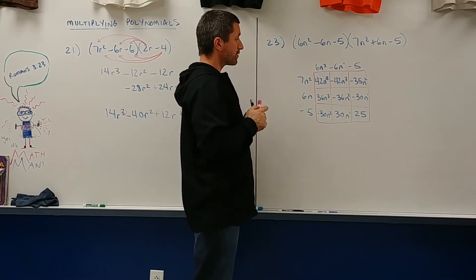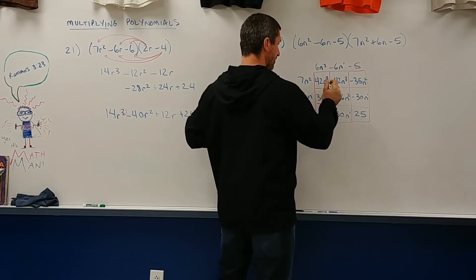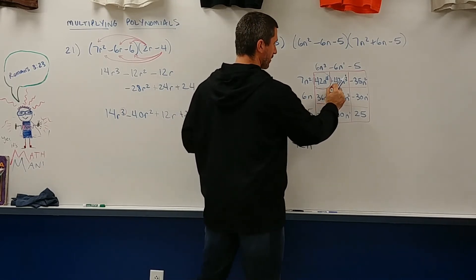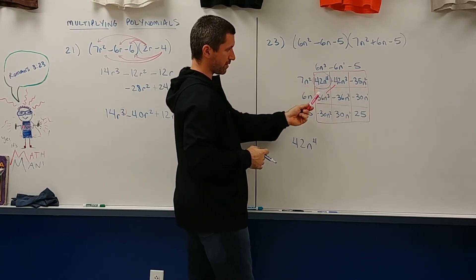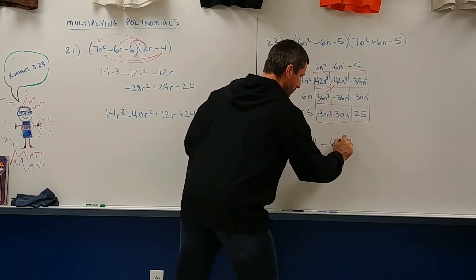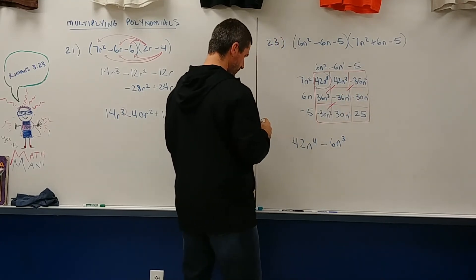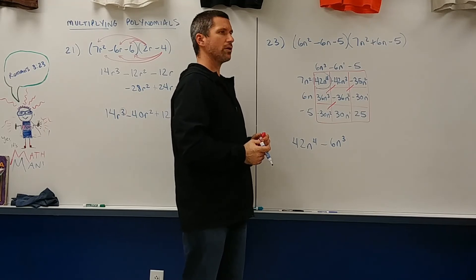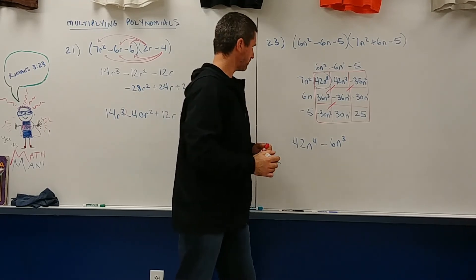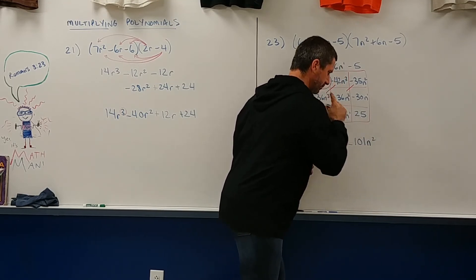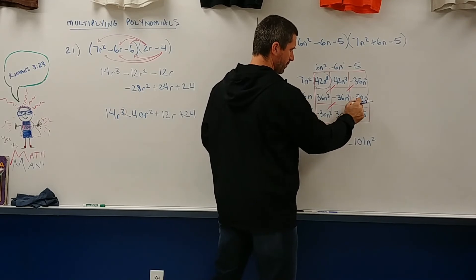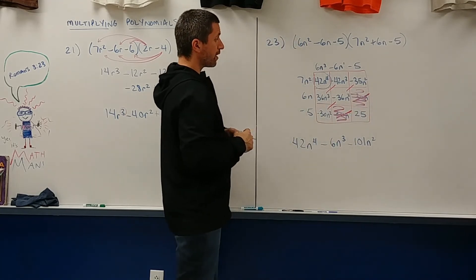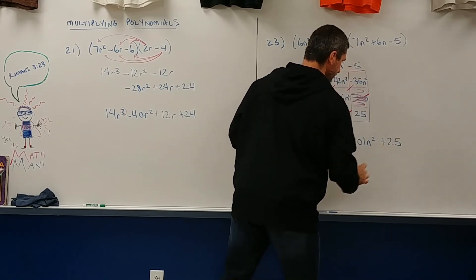Let's add like terms. The like terms are found diagonal of each other. So for this one, this has no like term, so we're just going to keep it: 42n to the fourth. We're going to add these two together. So that's negative 42 and 36, and that would be a negative 6n cubed. Let's combine these three. Negative 66 and another negative 35 is negative 101n squared. Oh look at this, 30 positive and negative. Those would cancel. So you can just cross out the boxes like that. And we have plus 25.